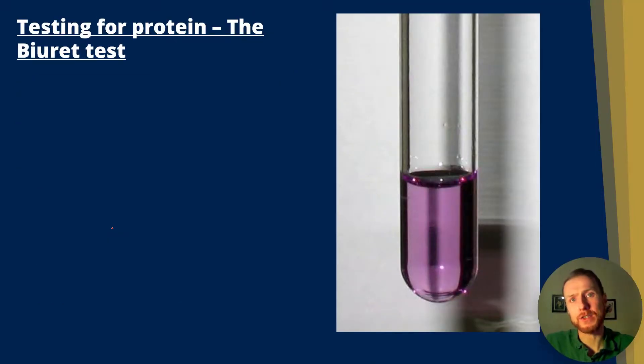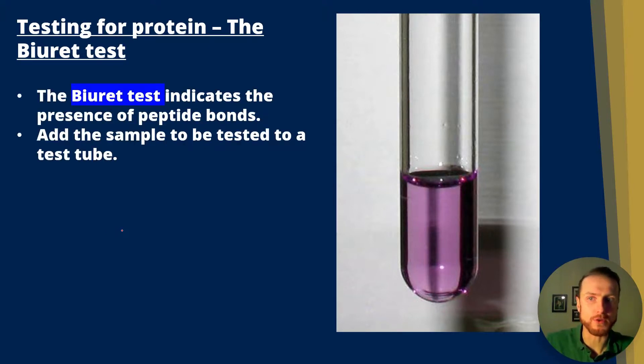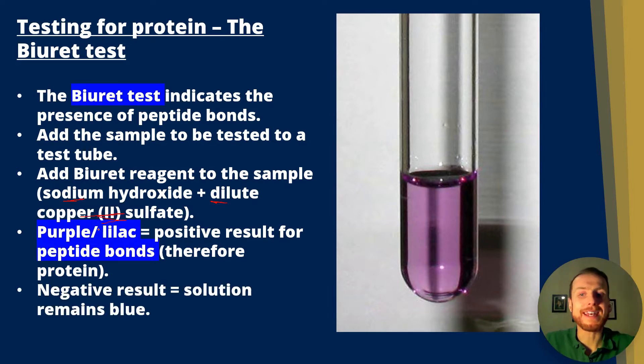Testing for proteins next. The biuret test is the test for proteins and indicates the presence of peptide bonds. You add biuret solution to your sample, and if it changes color to become purple or lilac, that's a positive result for peptide bonds. The biuret solution is sodium hydroxide plus dilute copper sulfate. A negative result is if the solution does not change color and remains blue.